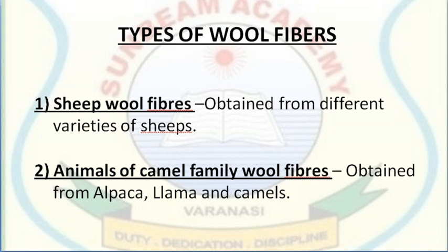The Lohi breed provides good quality wool used to make quality cloth and carpets. Bhakarwal breed provides wool used to make woolen shawls because the fibers are long. Marwadi breed provides coarse wool used to make carpets and blankets. The Patanwadi breed provides soft and short fiber used to make hosiery cloth.